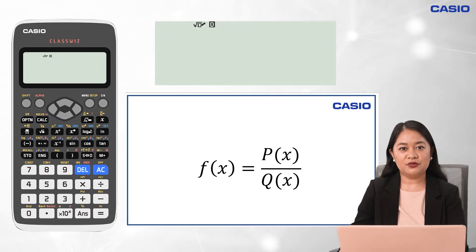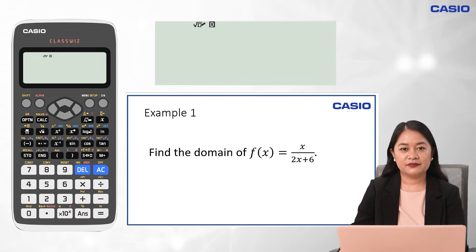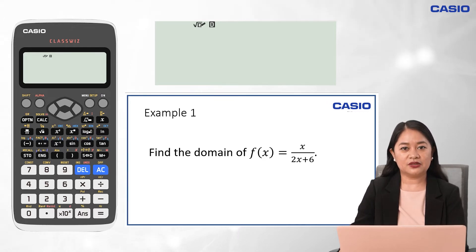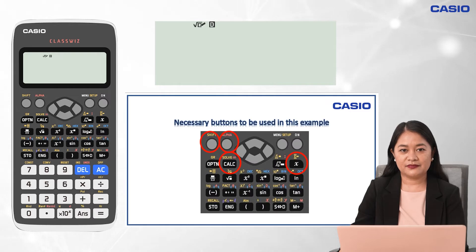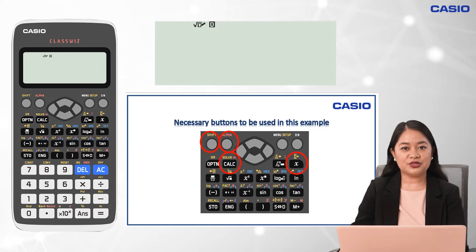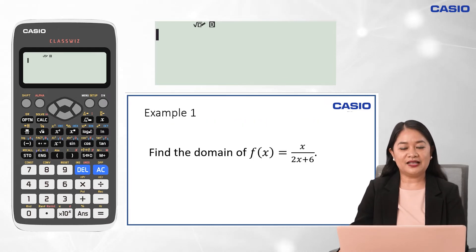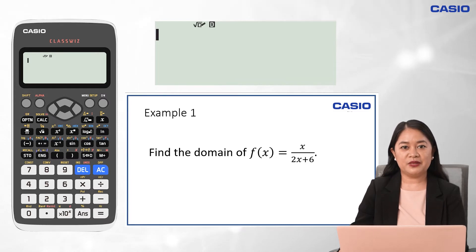Let's have an example in identifying the domain of a rational function. We will compute the zeros of the denominator to identify the domain of this given function. The basic buttons to be used are Shift, Alpha, X, and Calculate buttons. We will use the Calculate menu of the Casio Classways. To proceed, press Menu, and then 1.